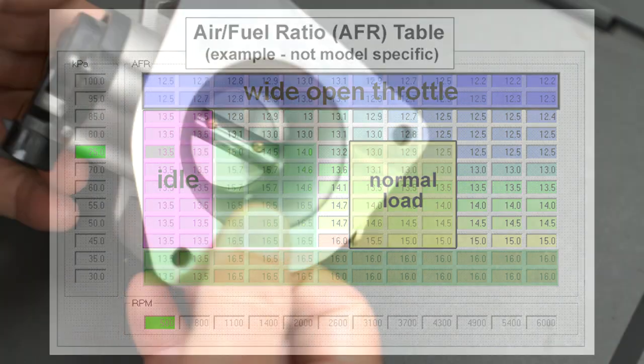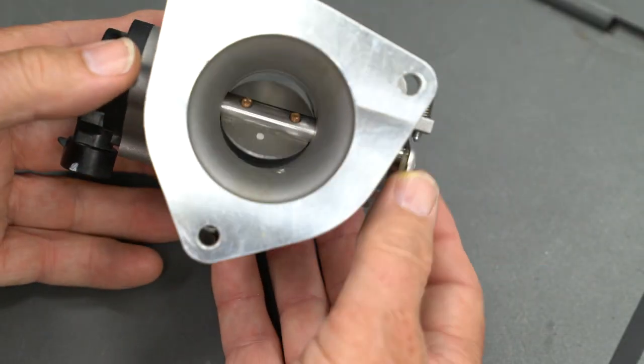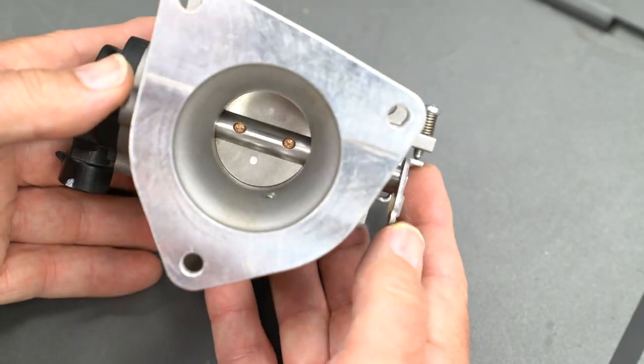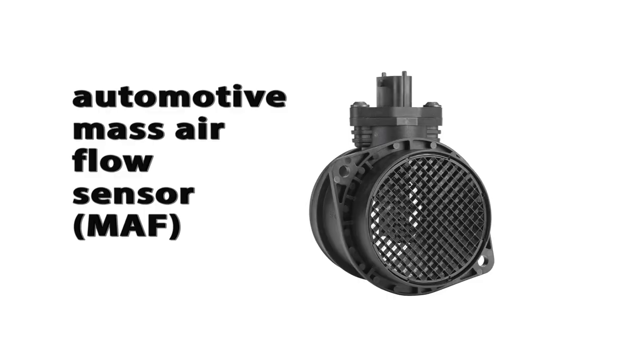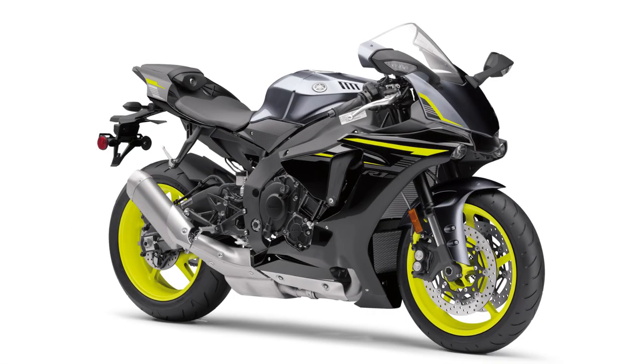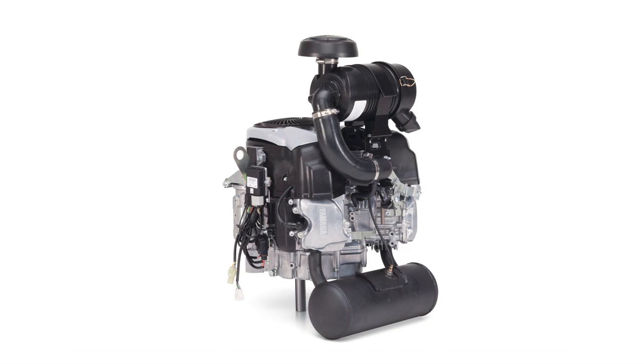Before the ECU can determine how much gasoline to inject, it must know how much air is going into the engine. Most automotive fuel injection systems measure the amount of air flowing into an engine with some type of mass airflow sensor. But virtually all fuel injection systems used on motor sports and multi-purpose engines, including the Yamaha MXV engines, calculates intake air volume.